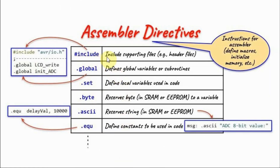The include directive is used to include supporting files such as header files. As an example, we are including the header file avr.io which allows the assembly code to interact with IO ports and registers. The global directive defines global variables or subroutines used in the assembly code. For example, here we are defining two global subroutines: LCD write and initialize ADC.